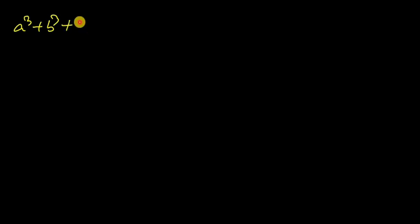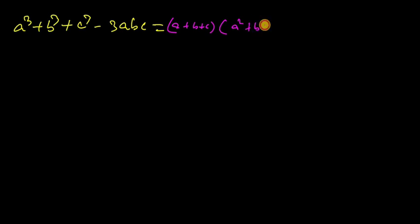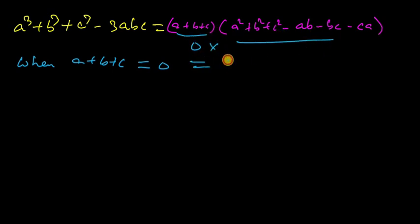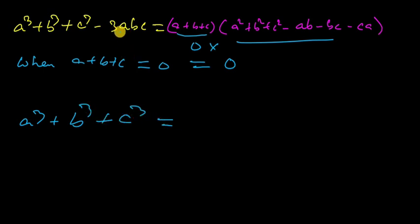Now, a cubed plus b cubed plus c cubed minus 3abc equals (a + b + c) into (a squared plus b squared plus c squared minus ab minus bc minus ca). The special condition is: when a + b + c equals zero, the right-hand side becomes zero, so therefore a cubed plus b cubed plus c cubed equals 3abc.